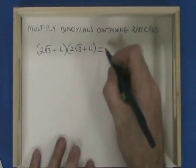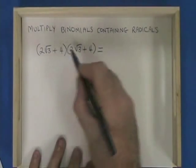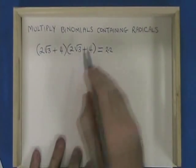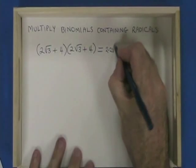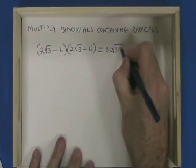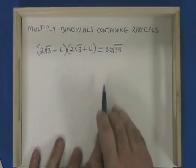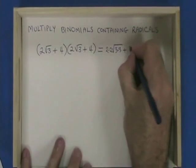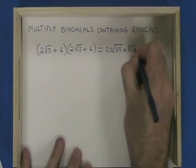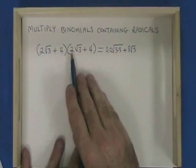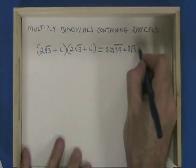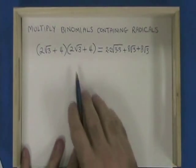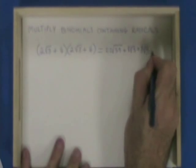In this example, I have 2 times 2. Square root of 3 times the square root of 3, which gives me root of 3 times 3. I have 4 times 2 root 3, that's plus 8 root 3. Here I also have 4 times 2 root 3, that's also plus 8 root 3. And 4 times 4, that's 16.